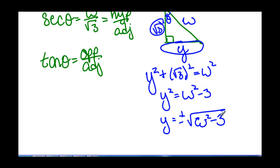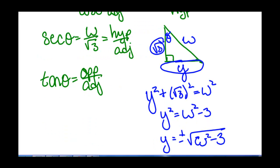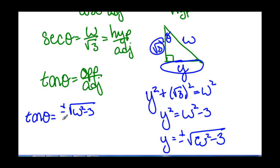We can determine whether y is plus or minus based on our angle theta. Since theta is between 0 and pi over 2, tangent of theta equals either plus or minus square root of w squared minus 3 over the adjacent side, which is square root of 3.